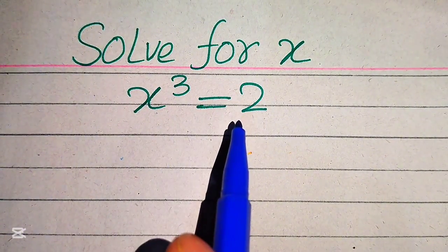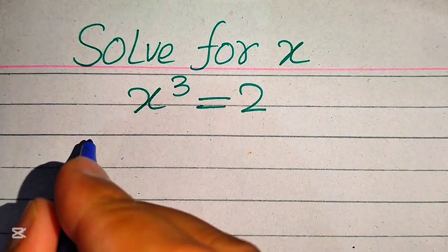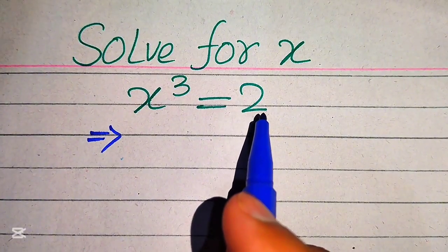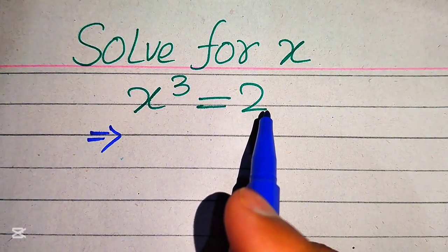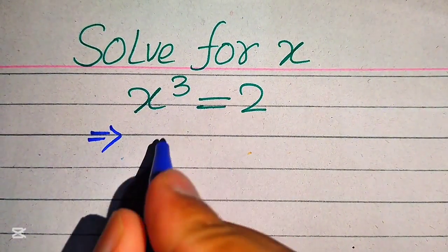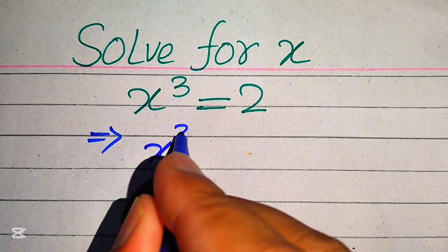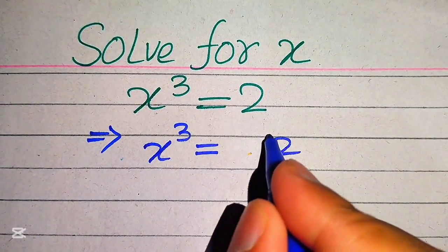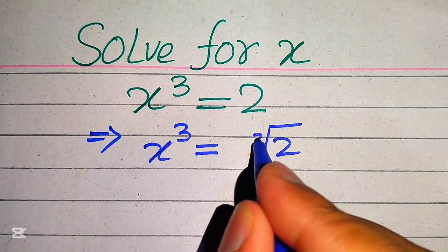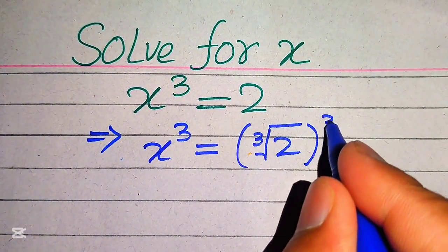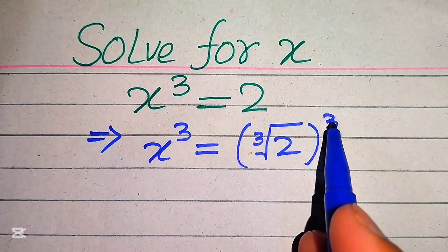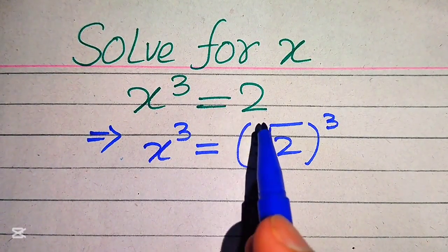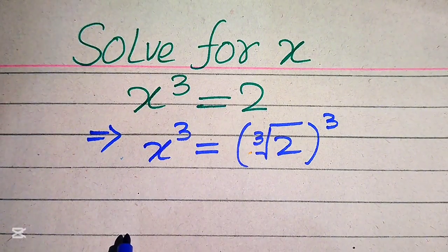To convert the right hand side, we take a cube and cube root at the same time on the right hand side. So our equation is written as x cubed equals cube root of 2, and that whole expression is cubed. The cube and cube root cancel out each other, and we again get 2.